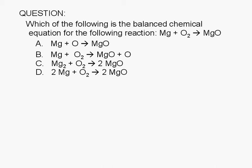Which of the following is the balanced chemical equation for the following reaction? Mg plus O2 yields MgO.